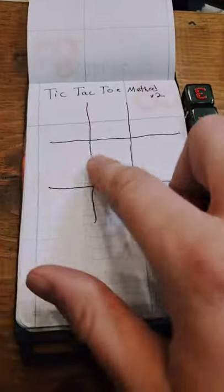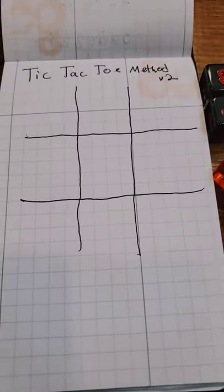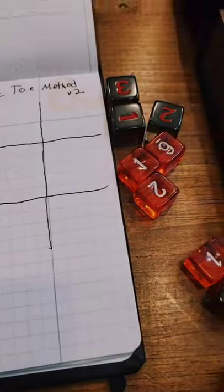This one, this time we're going to roll each die, and then we're going to place the die somewhere in the grid, and then use the different Tic-Tac-Toe lines to determine what our six ability scores are.